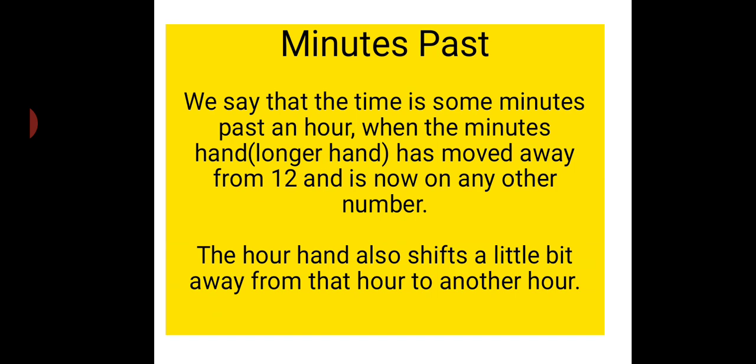Now as the minute hand is moving away from 12 and going to other numbers, the hour hand too shifts a little bit. The minute hand moves faster than the hour hand. If you take a closer look at your analog clock, you'll see that when the minute hand has moved away from 12 and is now on 1, 2, or 3, the hour hand too will not be exactly on that number.